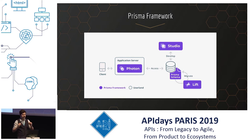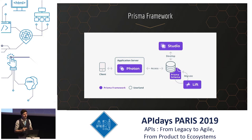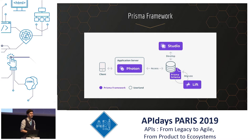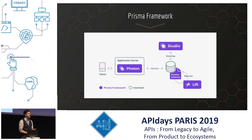The Prisma framework is a set of multiple tools working together to work with databases. They help you to access, migrate, and develop with databases, whatever technology you use. Currently, they can work with PostgreSQL, MySQL, SQLite, and there is more to come, including MongoDB.